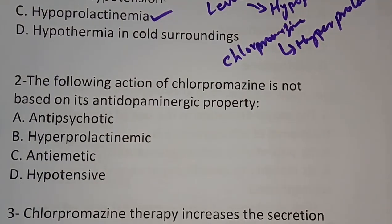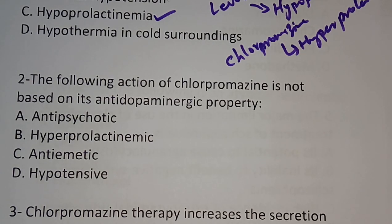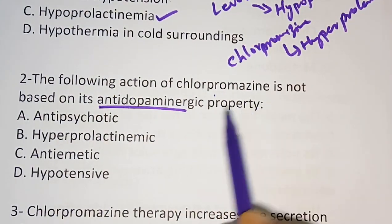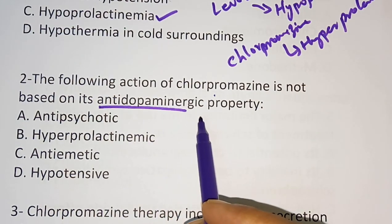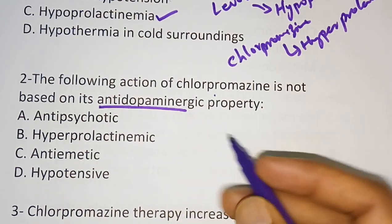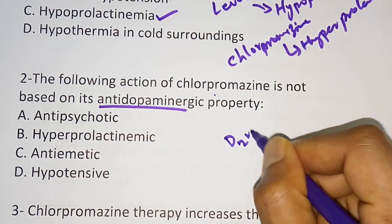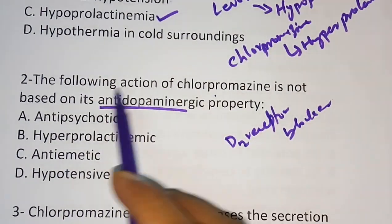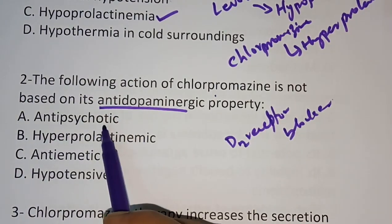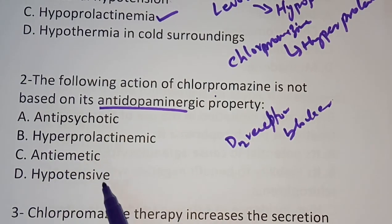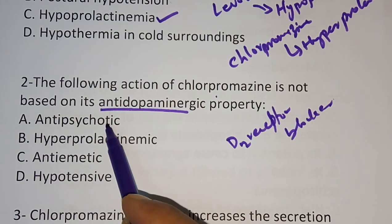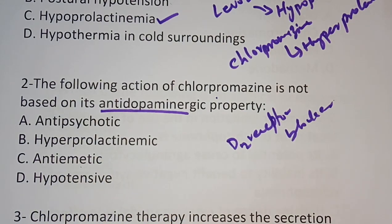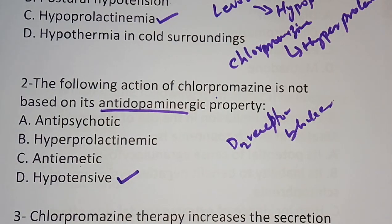Question 2: The following action of chlorpromazine is not based on its antidopaminergic property. Neuroleptics have D2 receptor blocker action. Which of the following is not related to D2 receptor blocking? Options are: antipsychotic, hyperprolactinemia, antiemetic, hypotensive. These three — antipsychotic, hyperprolactinemia, and antiemetic — are related to the dopaminergic system. The correct answer is option D, hypotensive.